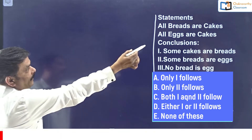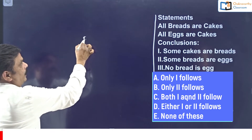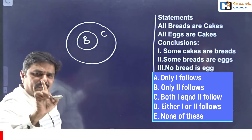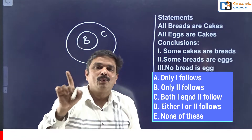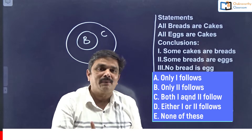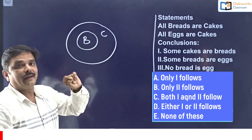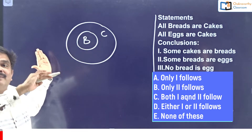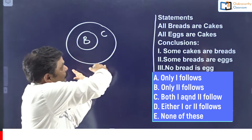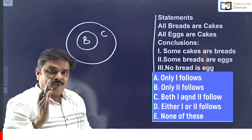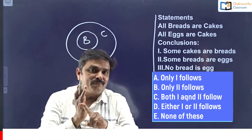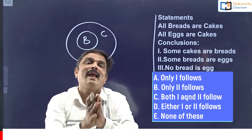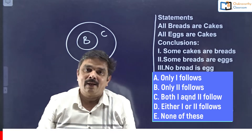The first statement is: All breads are cakes. I have to draw this one. This is the basic diagram - the first diagram. To prove these two statements, this is the first diagram, and there won't be any diagram before this one. Whatever other diagrams exist will come after this only. You have to maintain the least number of cuts and minimum possible overlap - that is called the basic diagram.